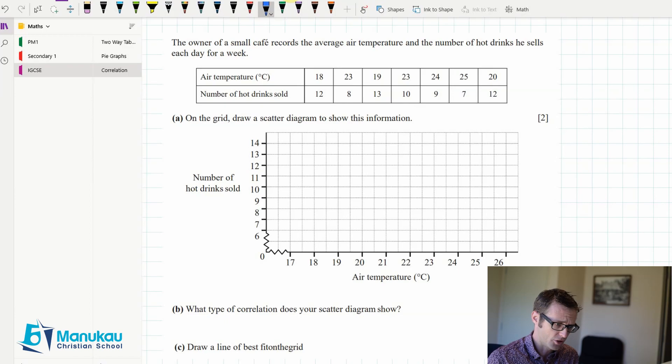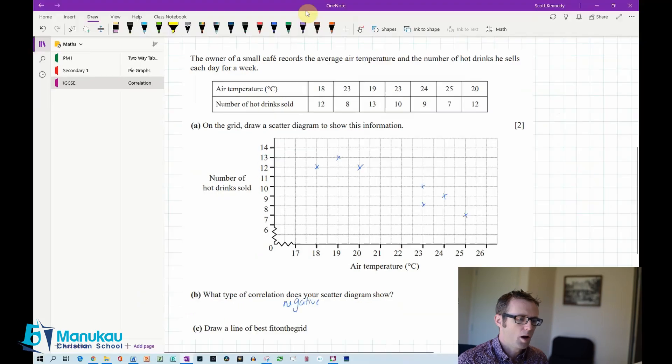And we have to plot this on our scatter diagram. So, number of drinks sold, 12. And the air temperature at that point was 18. So, you go 12 on your y-axis across to 18 on the x-axis. So, I'm just going to go ahead and plot these now.